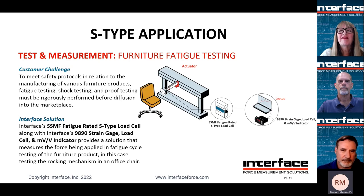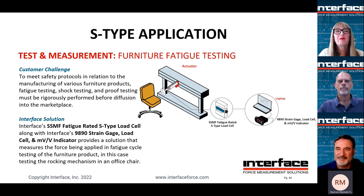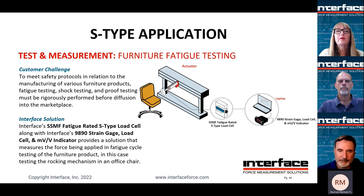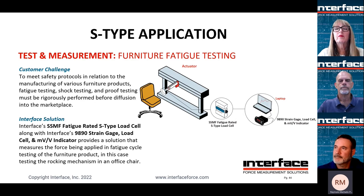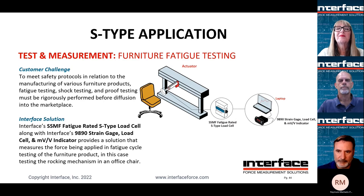Some of the items we interact with every day are still tested. When you need to characterize the fatigue response of furniture, customers will turn to the SSMF S-Type load cell. These load cells are rated for greater than 100 million repeated and reverse cycles, making them a good choice for testing the rocking mechanism in an office chair. Combined with the 9890 indicator, we're able to collect data that the customer uses to make sure their product is safe and will provide the anticipated service life.